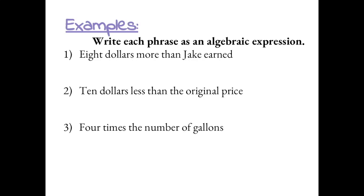What is unknown is what Jake earned. So we can define this with a variable and you can pick any variable or any letter that you want. I'm going to label it as J for what Jake earned.